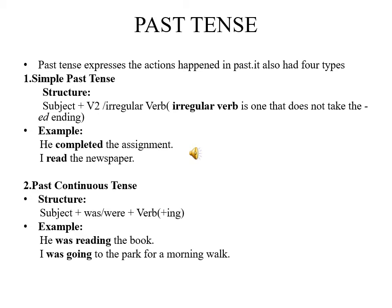Second type of past tense is past continuous tense. Its structure is subject plus was or were plus verb plus ING, that is the fourth form. Example, he was reading the book. I was going to the park for a morning walk.